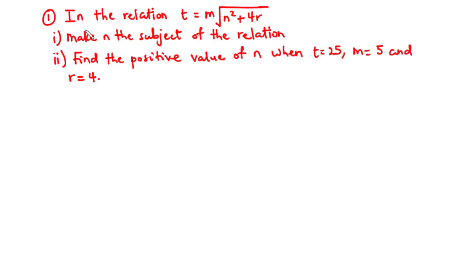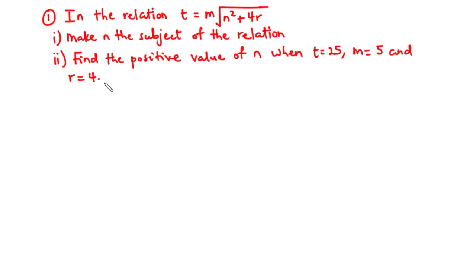Question number one: in the relation T equals m times the square root of n squared plus 4r, we are supposed to (i) make n the subject of the relation, and (ii) find the positive value of n when T equals 25, m is 5, and r is 4.